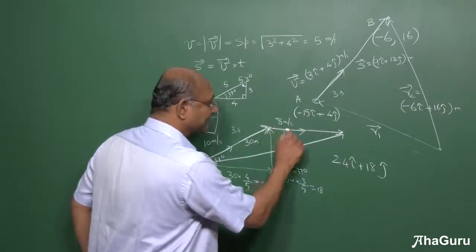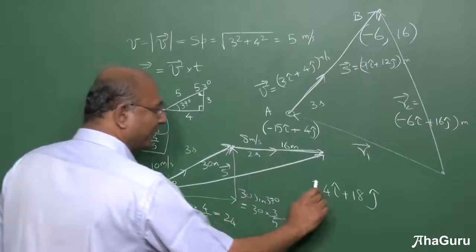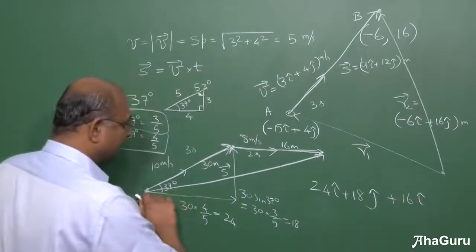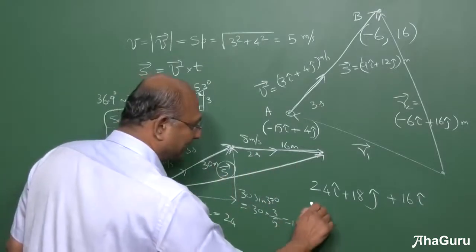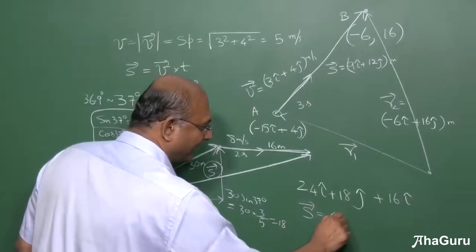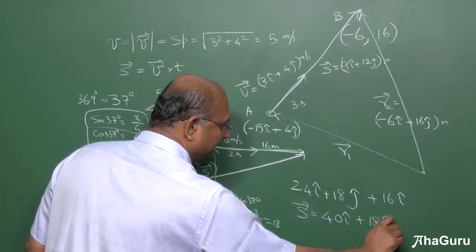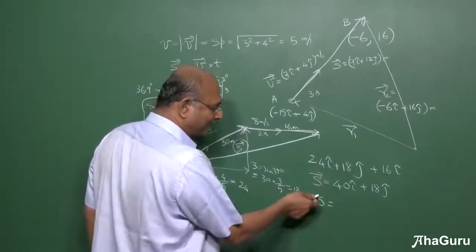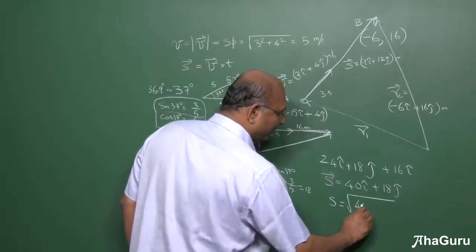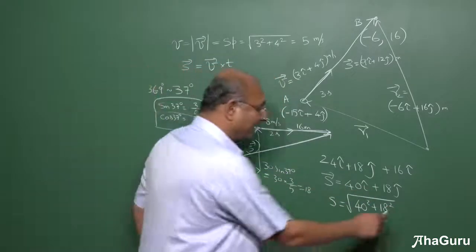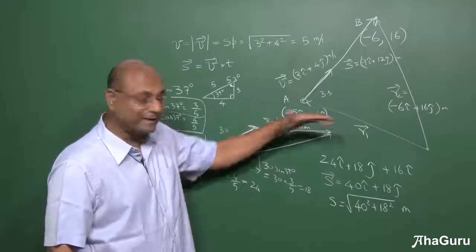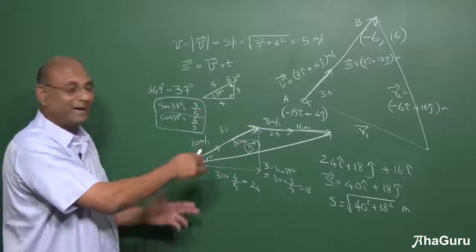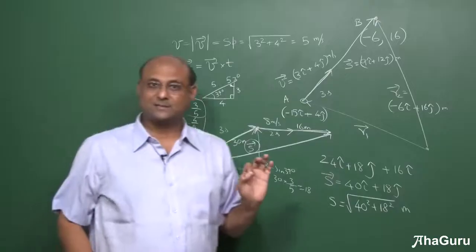The second leg is 8 × 2 = 16 meters horizontally, which is 16i-cap. Adding both displacement vectors: 24i-cap + 18j-cap + 16i-cap = 40i-cap + 18j-cap meters. The magnitude of the total displacement is root of 40² plus 18². This shows that converting motion at various angles into vector form and adding components makes the problem very easy.